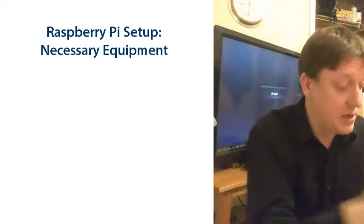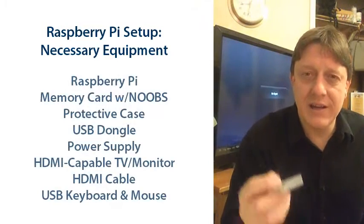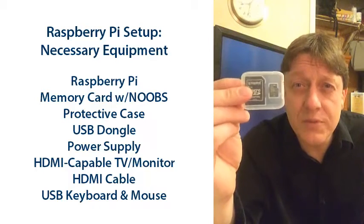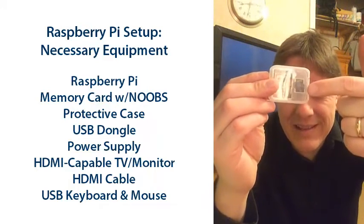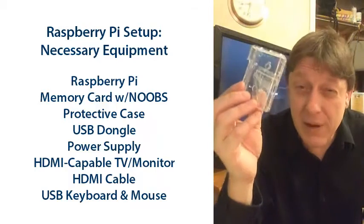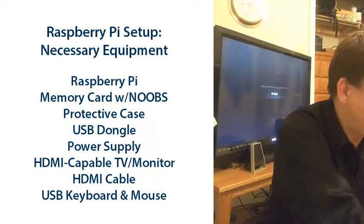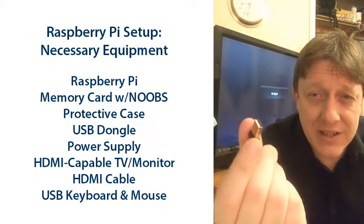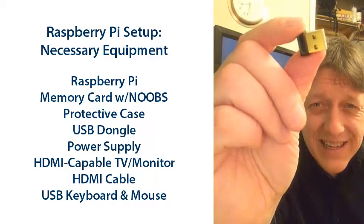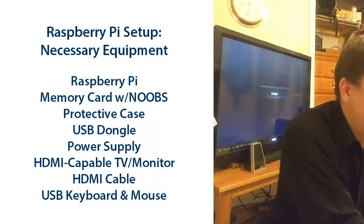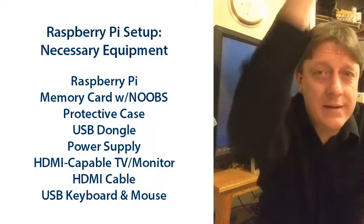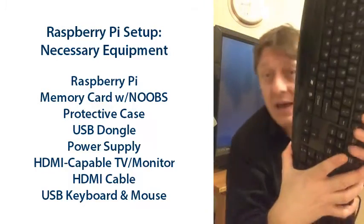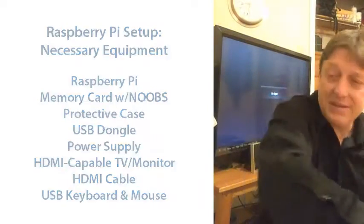In order to get this computer to work, you're going to need a little bit more than a mere computer board. You're going to need some memory — something called NOOBS, new out of box software — a micro USB drive, the little one, not the big one. You're going to need possibly a case to keep everything from getting damaged. If you want to communicate to the internet, you're going to need something called a USB dongle. This little tiny thing can connect you to the network if you have a Wi-Fi network. You're going to need a power supply, and you'll need a mouse and a keyboard. Each of these elements can be purchased for something around $10.